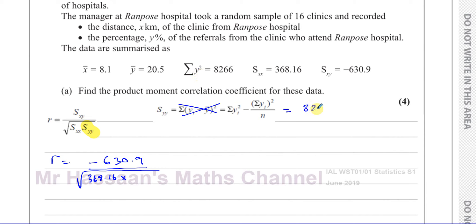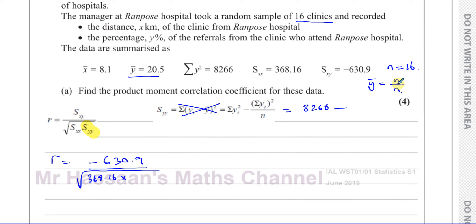So Syy equals 8,266 minus the sum of y all squared divided by n. We need the sum of all y values, which we don't directly have. But we do have the mean of y and we know there are 16 clinics, so n equals 16. Since the mean of y equals the sum of y divided by n, the sum of y equals n times the mean of y, which is 16 times 20.5.